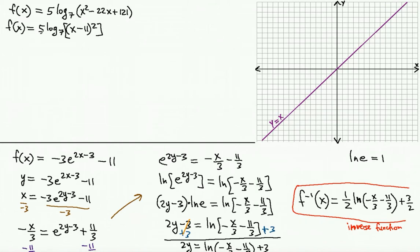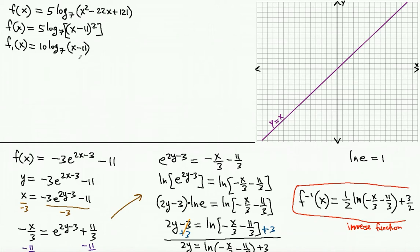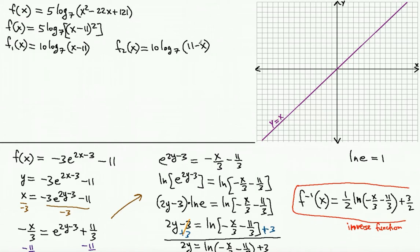To split this into two one-to-one functions, apply the logarithm power rule: bring the exponent 2 down to multiply 5, giving 10·log₇(x − 11) as the first one-to-one function. The second one-to-one function uses the input 11 − x instead of x − 11. This works because (x − 11)² and (11 − x)² give the same result, so both are valid. There are therefore two one-to-one functions possible.